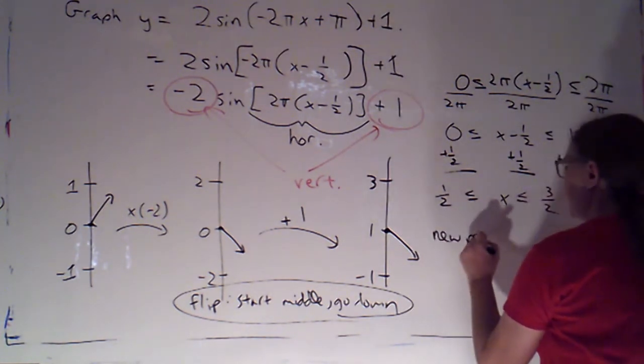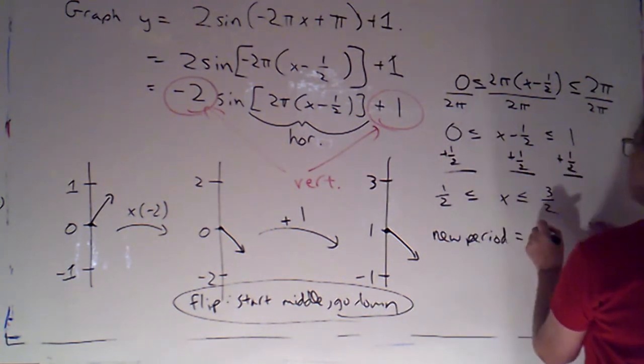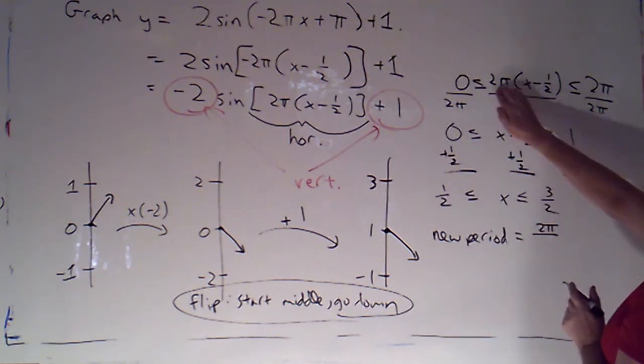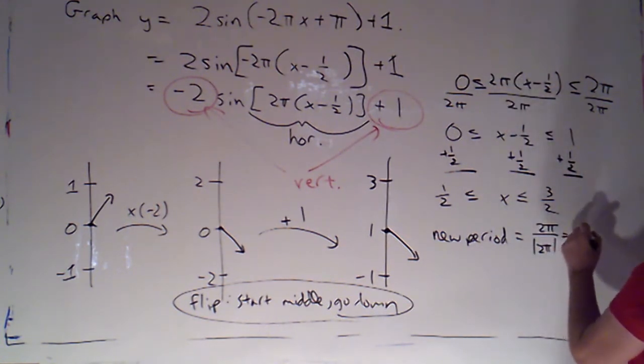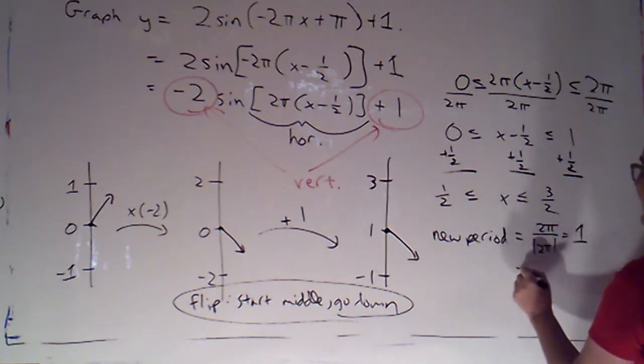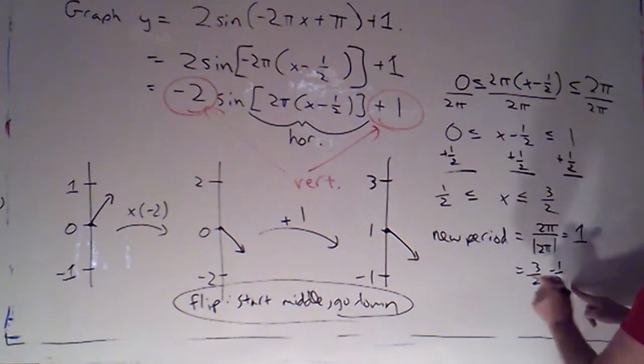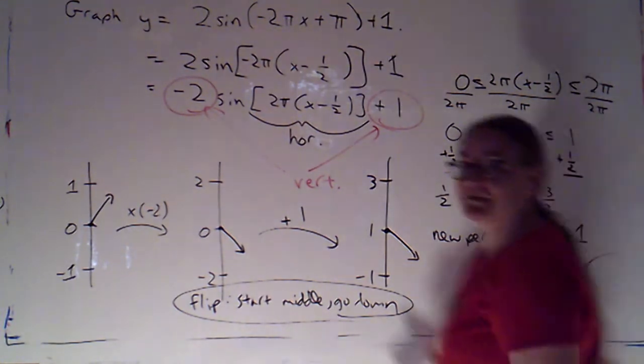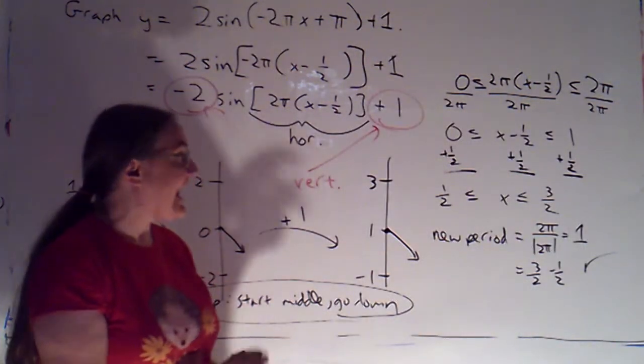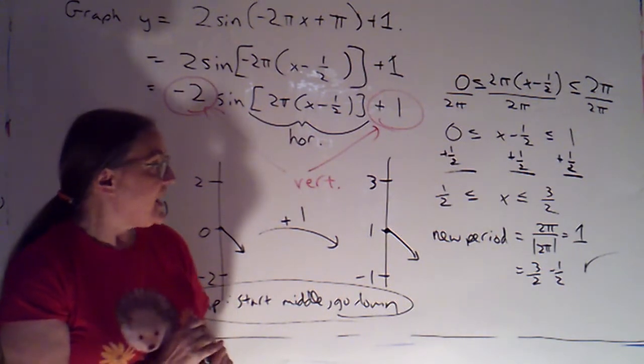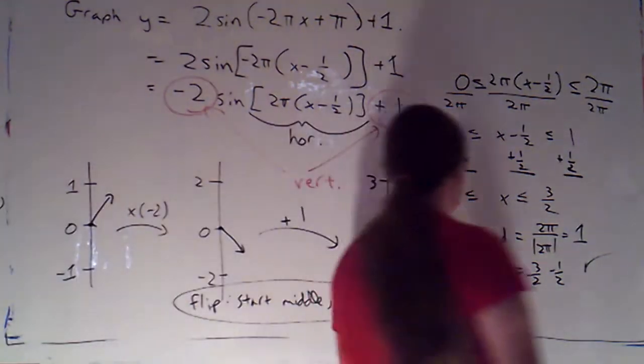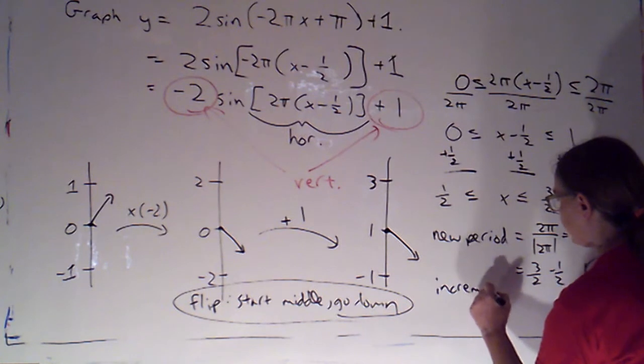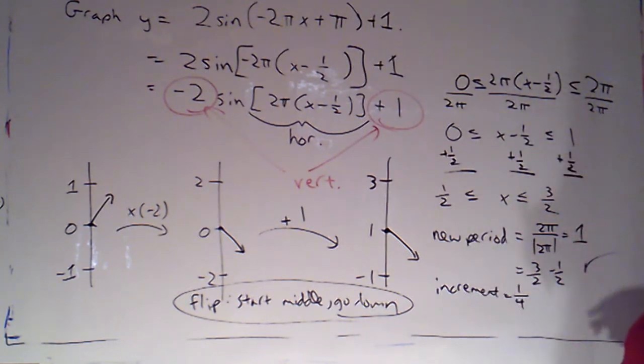So the new period, that's going to be the original period 2π divided by the absolute value of whatever I was multiplying by. So that's going to be 1. And I can do a quick check. That does equal 3/2 minus 1/2. So that is the distance between my new starting and my new ending point. So if that's the period, the increment is a quarter of that. So the increment is 1/4.